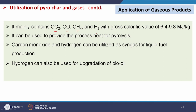For application of gaseous products from pyrolysis, the gas mainly contains CO2, CO, CH4, and H2. Since it contains CH4 and H2, it has a calorific value ranging from 6.4 to 9.8 MJ/kg. It can be used to provide process heat for pyrolysis, carbon monoxide and hydrogen can be utilized as syngas for liquid fuel production, and hydrogen can also be used for upgradation of bio-oil.